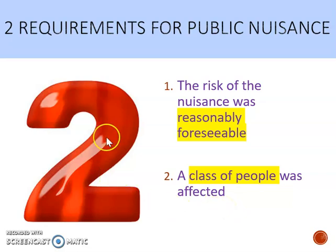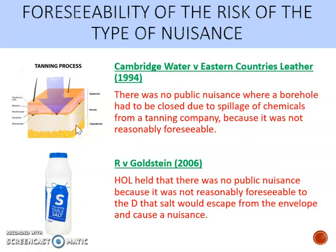Starting with reasonable foreseeability, we have two cases. The first is Cambridge Water, a really important House of Lords case. The defendant owned a leather tanning business and spillages of small amounts of solvents occurred over a long period of time. These solvents seeped through the floor of the building into the soil below.